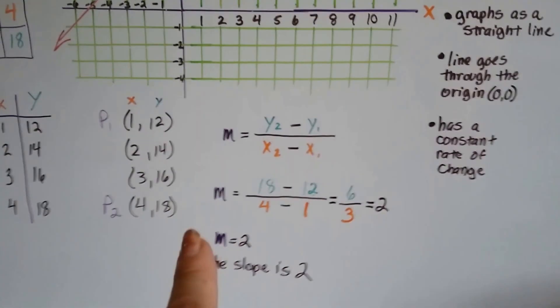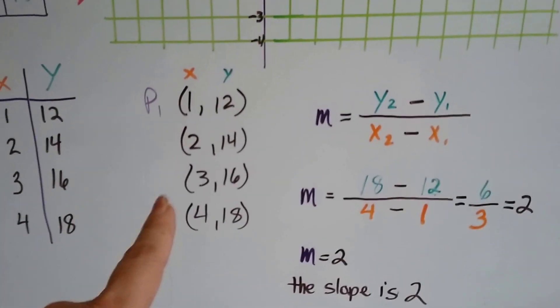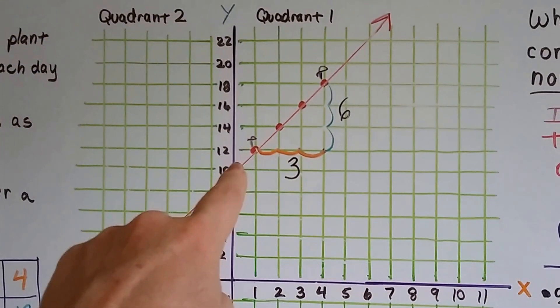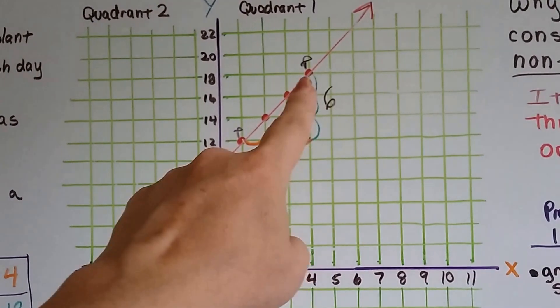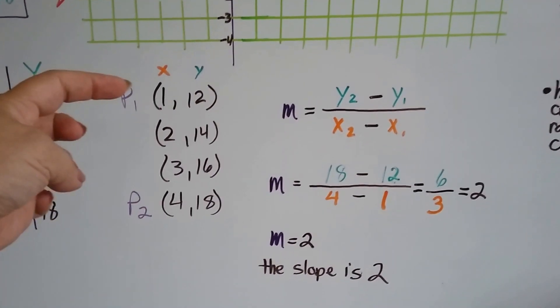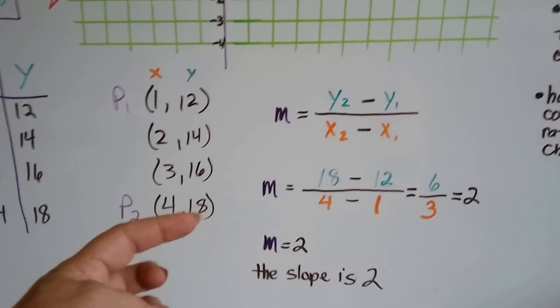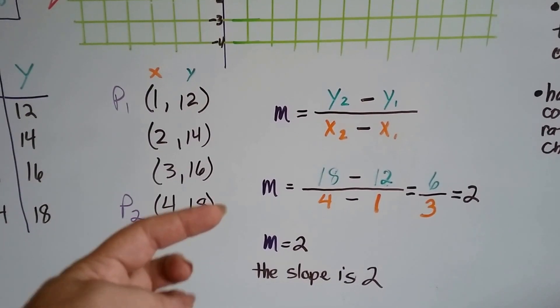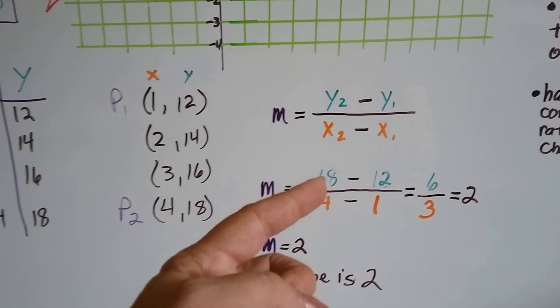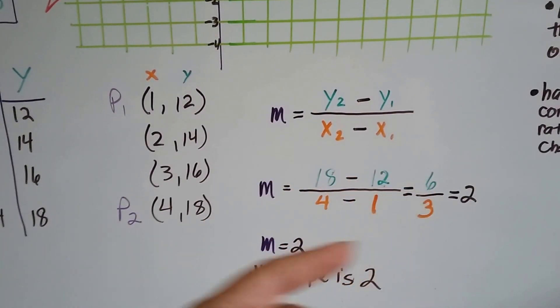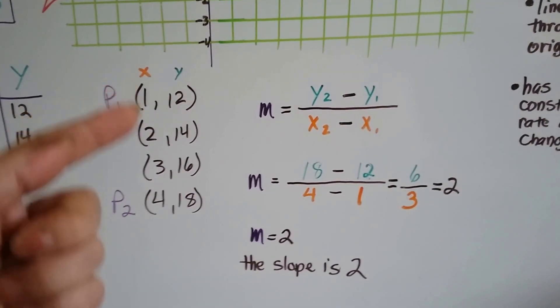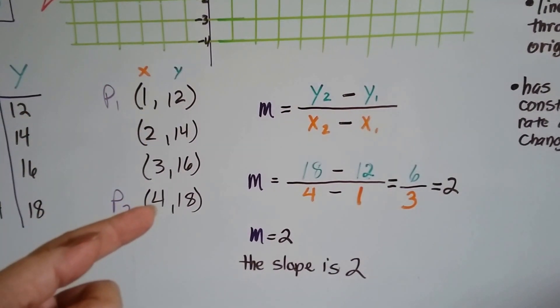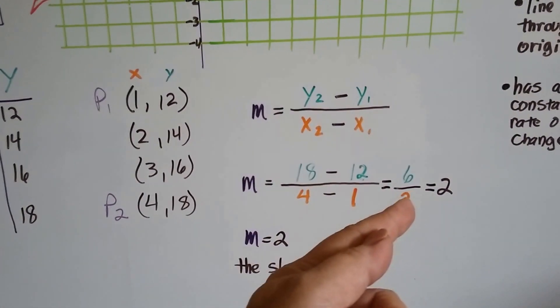We can do this using our coordinates. So I chose this to be point 1, our coordinate 1, 12. And our coordinate 4, 18 is going to be our point 2. I subtracted y2's value and y1's value from each other and got 18 minus 12, which is 6. Then I subtracted the x1 value from the x2 value, 4 minus 1, and got a 3.